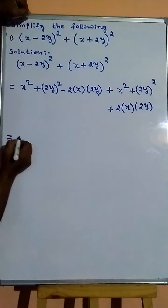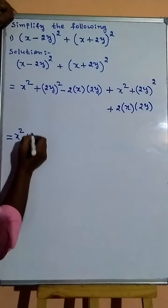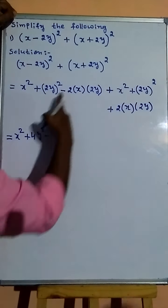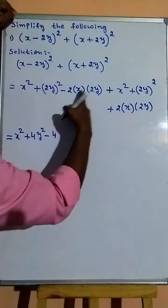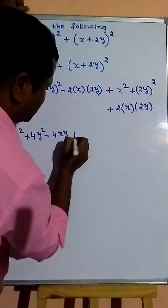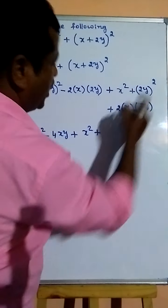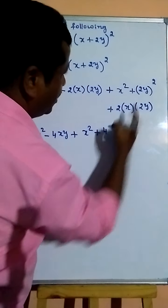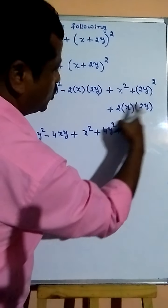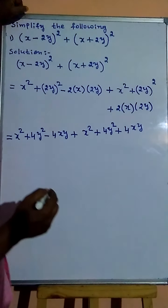Next, x squared plus 2 squared times 4y squared, plus y squared, minus 2 to the 4xy. And then: x squared plus 2 to the 4y squared, y squared, plus 2 to the 4xy.